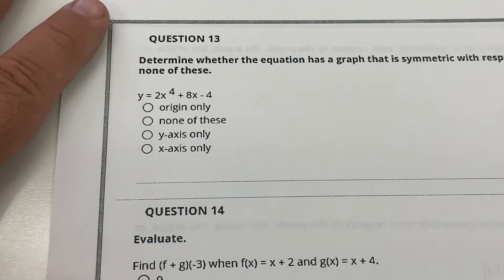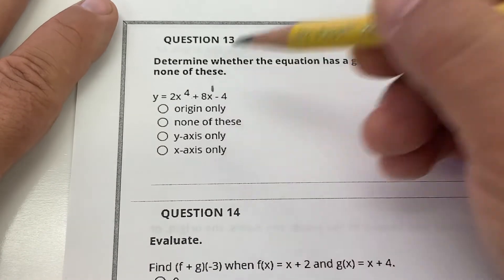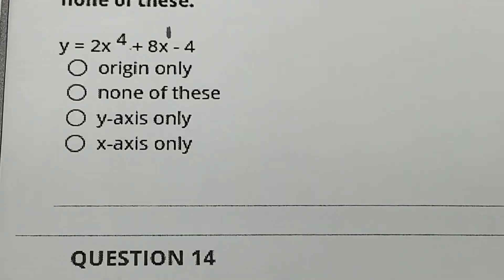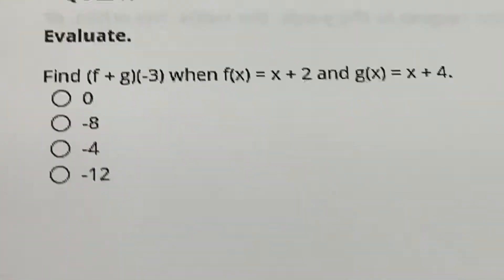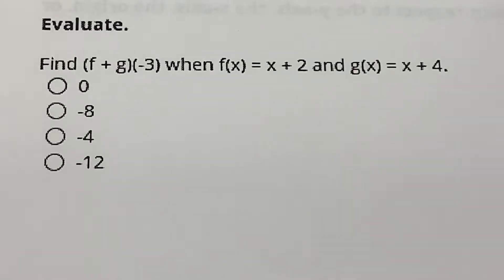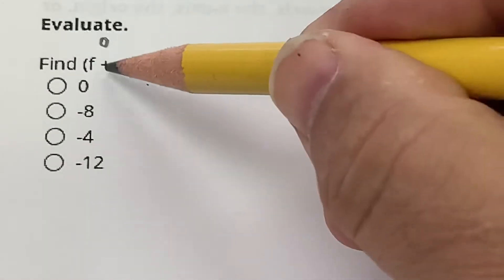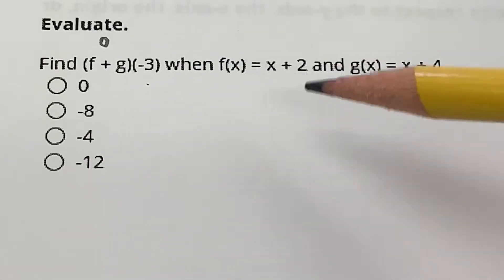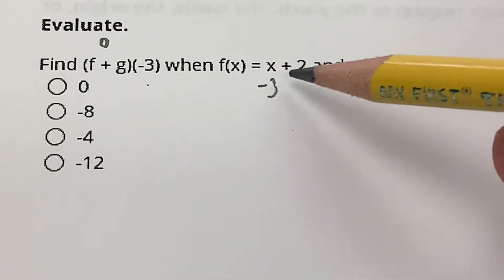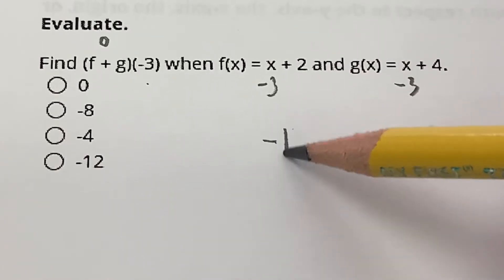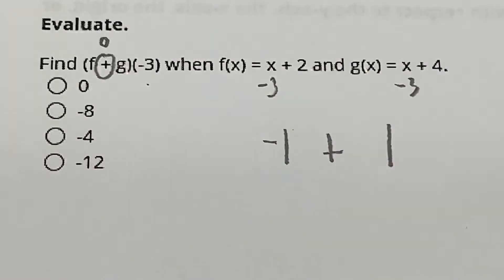Determining symmetry for the next graph: it has a fourth-power term and a first-power term, so it's neither even nor odd — no symmetry. For (f + g)(−3), I plug −3 into both functions. That gives me (−3 + 2) = −1 and (4 − 3) = 1. They want me to add them: −1 + 1 = 0.